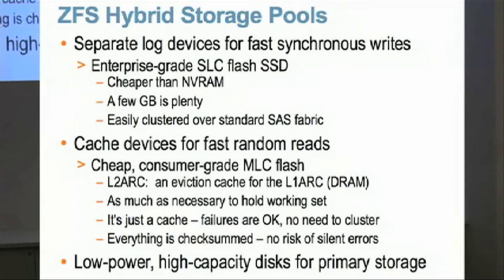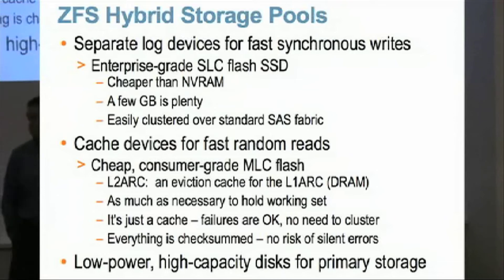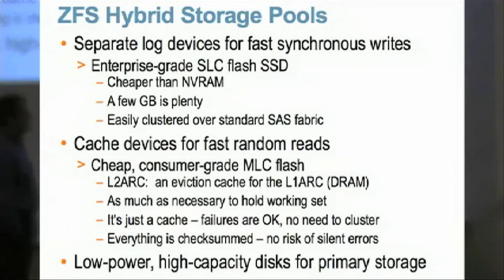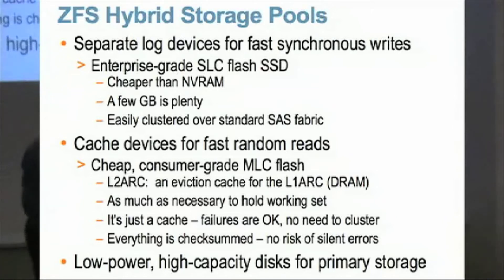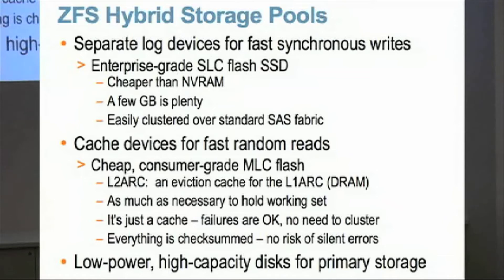What you want to do is think of flash as another tier in the memory hierarchy — in the same way that you have registers, L1 cache, E-cache, DRAM, and eventually disk — you think of flash as being somewhere between DRAM and disk, both in its cost and its performance. So there are really two ways that the file system would use this: one is on the read side and the other is on the write side.